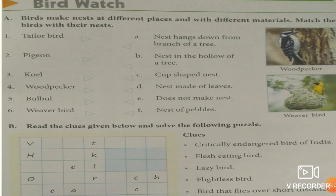Fourth one is woodpecker — nest in the hollow of a tree. Fifth one is bulbul — cup-shaped nest. Sixth is weaver bird — nest hangs down from the branch of a tree. To repeat: tailor bird — leaves, pigeon — pebbles, koel — no nest, woodpecker — hollow of a tree, bulbul — cup-shaped, weaver bird — hangs from branch.